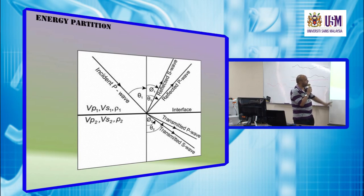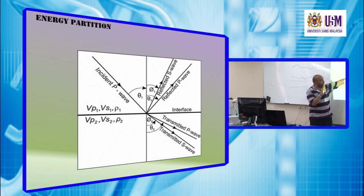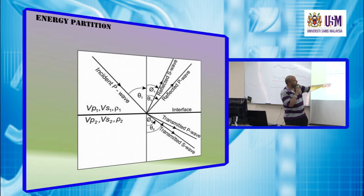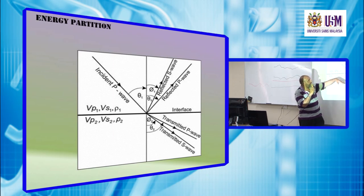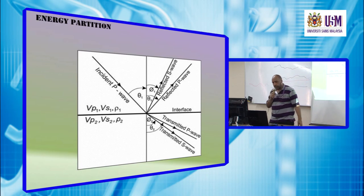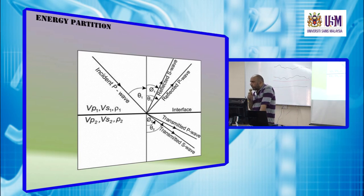We have two interfaces with VP1, VS1, Rho1, and VP2, VS2, and Rho2. We have incident P wave, reflected S, reflected P, and also transmitted S and transmitted P, obeying Snell law and law of reflection.